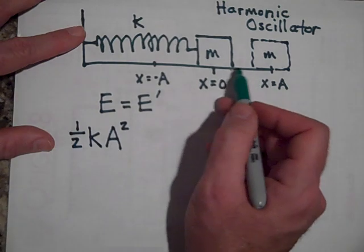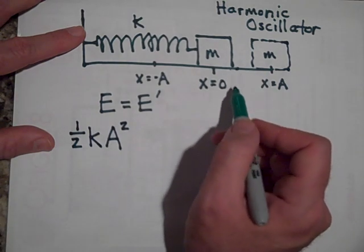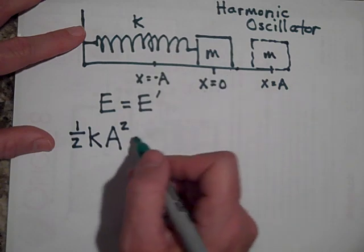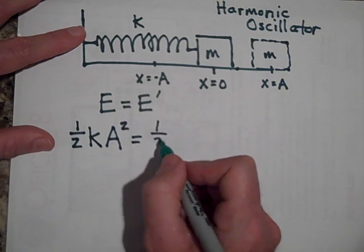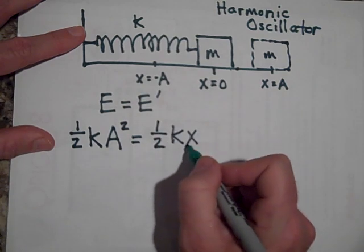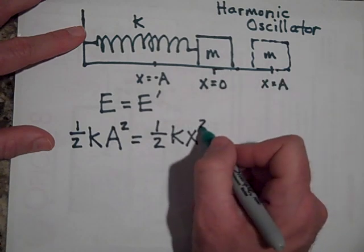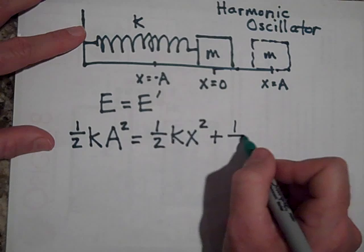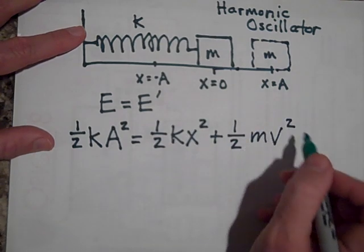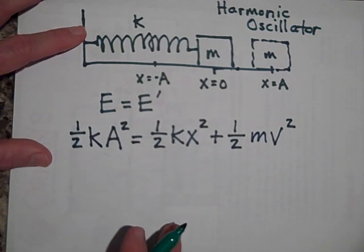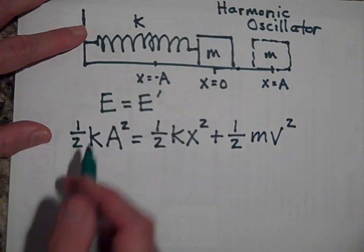At any other intermediate time, say like right here, it's gonna have a little bit of potential energy stored in the spring. This time that's X because it's not all the way out at A. But it's also going to have some kinetic energy. Okay, so that's the sentence that describes the energy conservation of a harmonic oscillator.